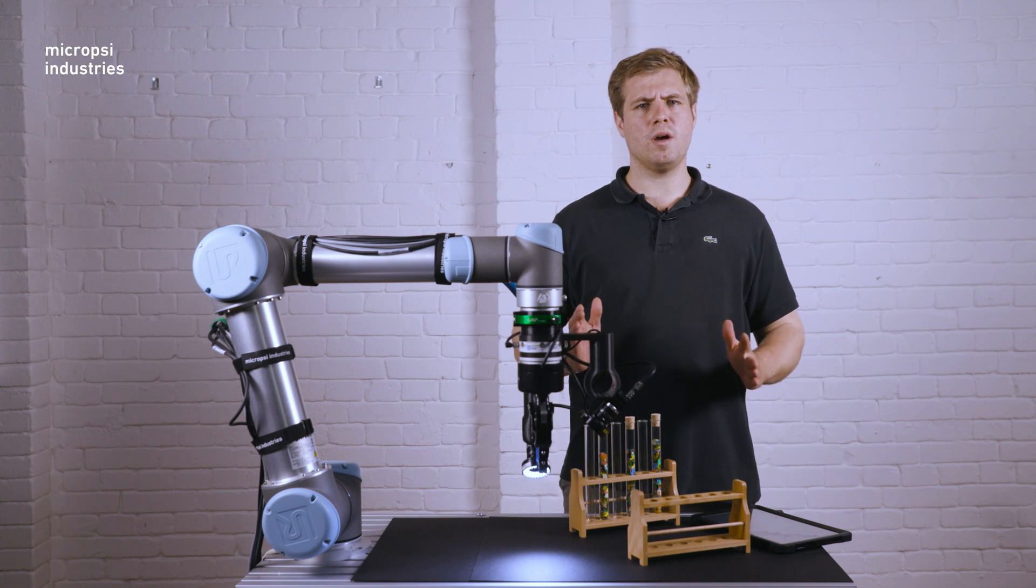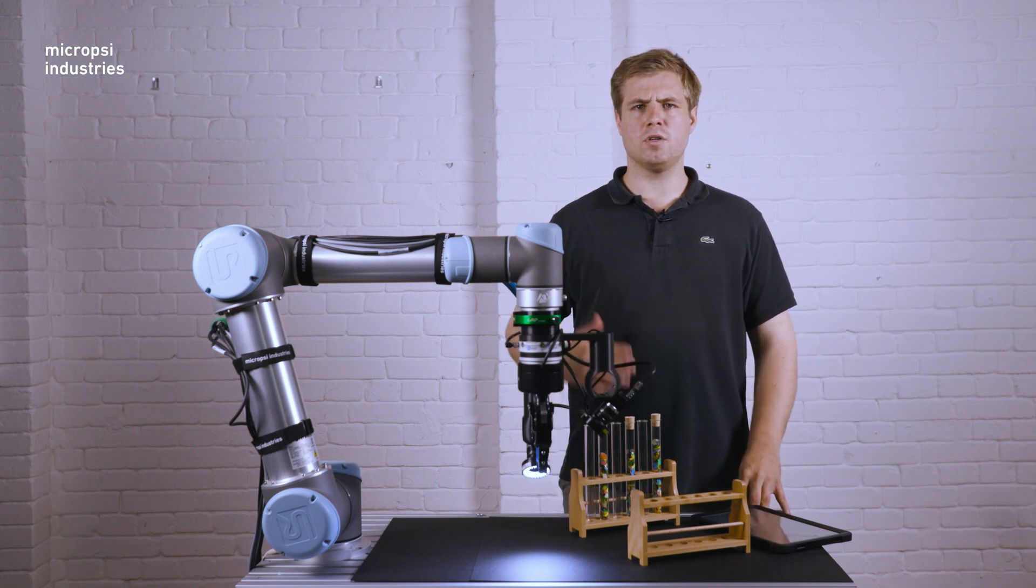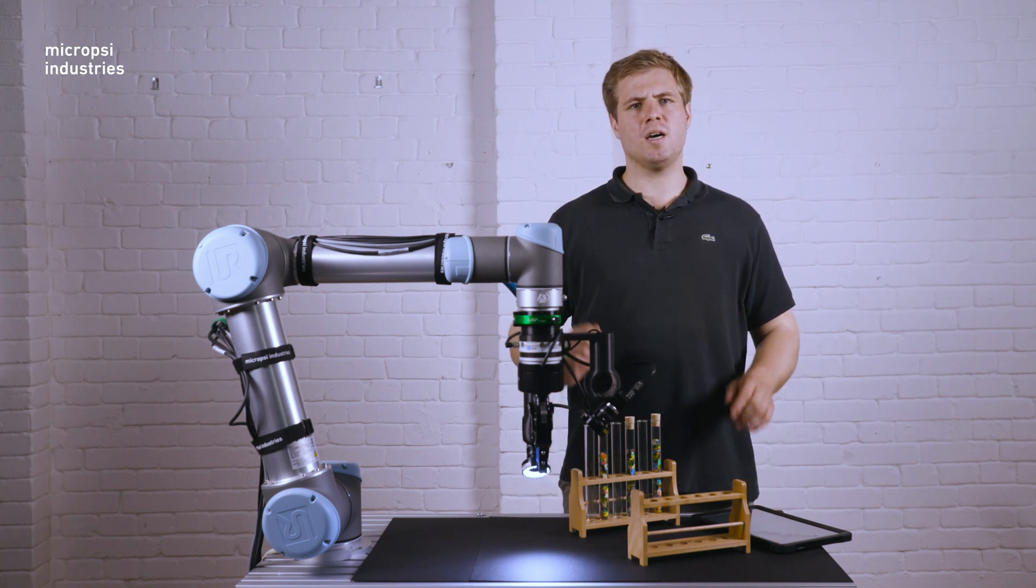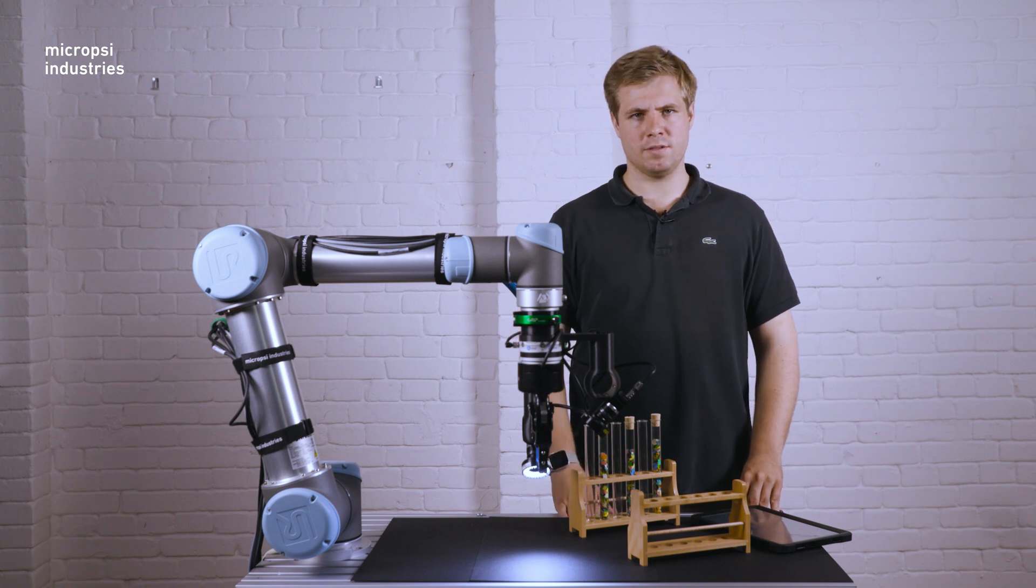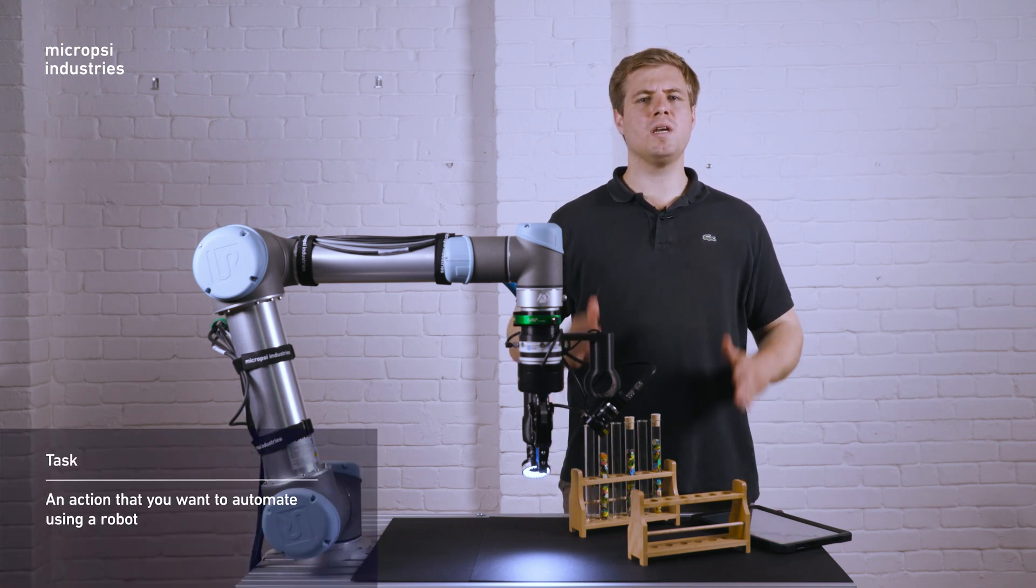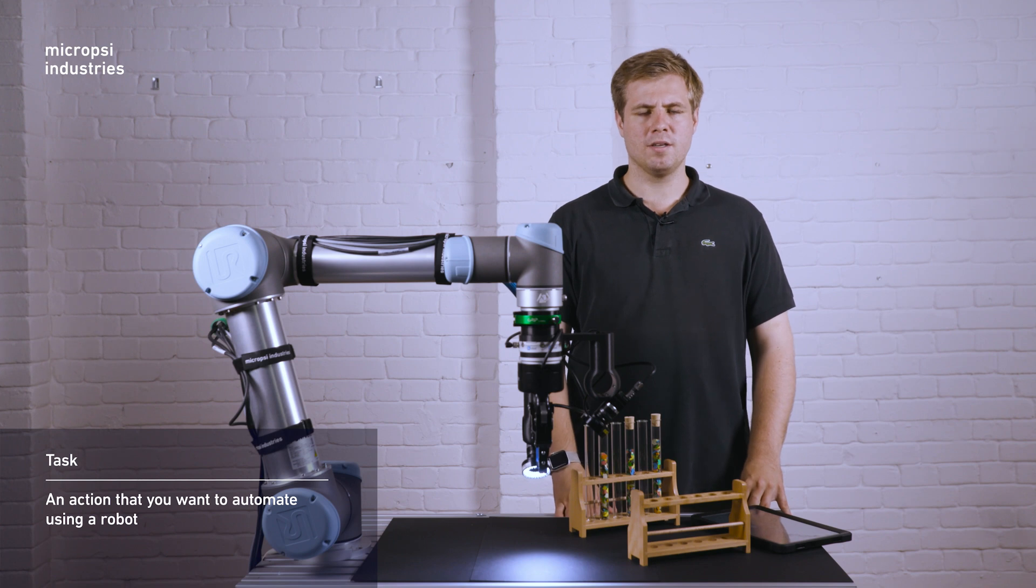When you plan to use the Mirai Robot Control System to solve an automation task, imagine the task divided into sections. By task, we mean an action that you want to automate using a robot.